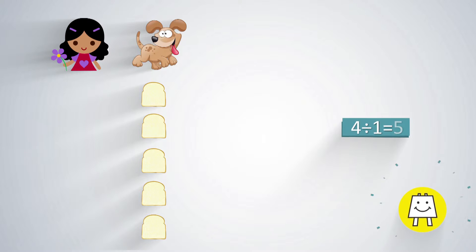For example, 4 divided by 1 is 4 and 9 divided by 1 is 9. 16 divided by 1 is 16.